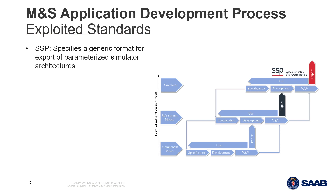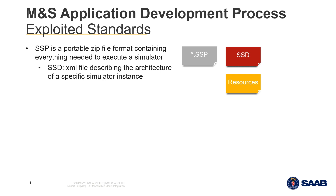Whereas the FMI standard focuses on the export of models for use in simulators, the SSP standard focuses on the export of parameterized simulator architectures for integration in simulators at a higher level of abstraction or for use in different frames of reference. SSP is a portable ZIP file format containing everything that is needed to execute the simulator, except for the actual simulation engine. If looking into an SSP file, you will see a system structure description or SSD XML file along with the resources folder.